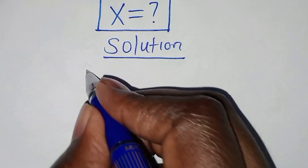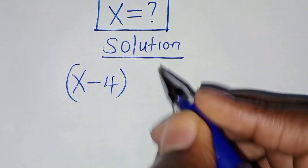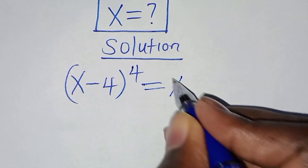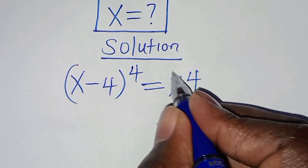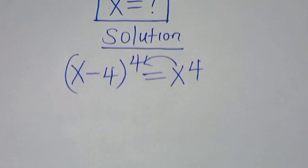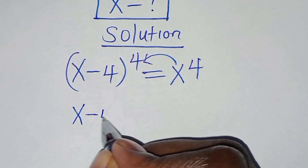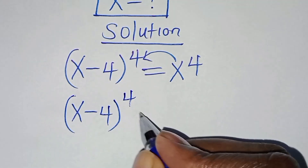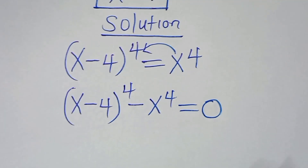Now we have x minus 4 raised to power 4, this is equal to x to power 4. The first step here is to take x to power 4 on the left hand side, so that now we have x minus 4 raised to power 4, subtract x to power 4, this is equal to 0.